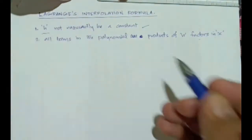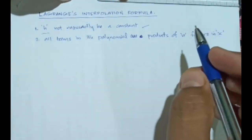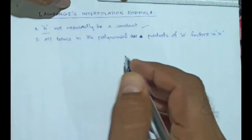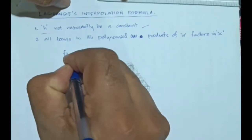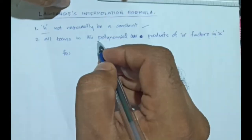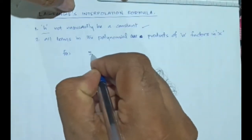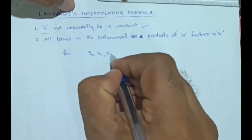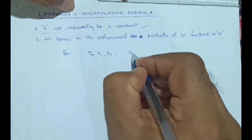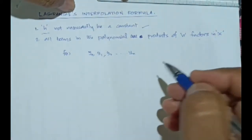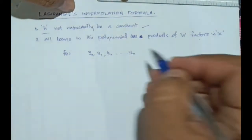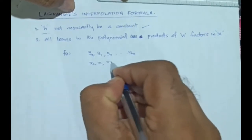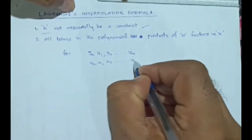Let's start with the derivation of Lagrange's interpolation formula. As in the previous cases, let's assume that there is a function f(x) which yields n+1 values y0, y1, y2, etc., up to yn, corresponding to the independent variable x values x0, x1, x2, etc., up to xn.